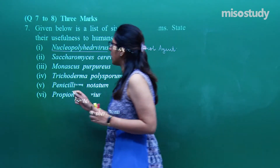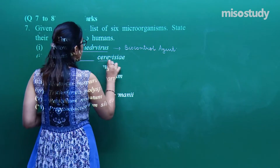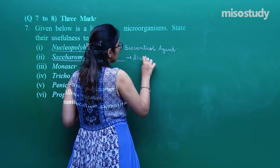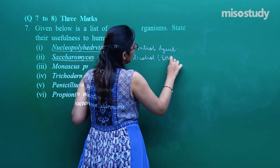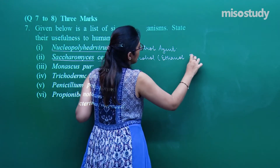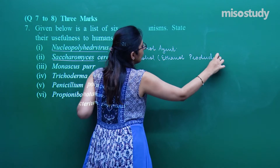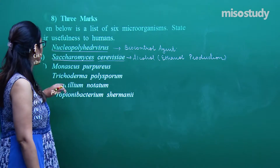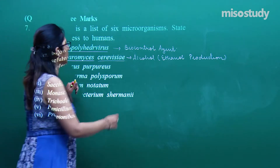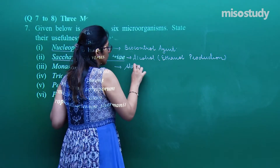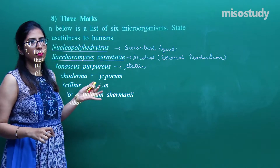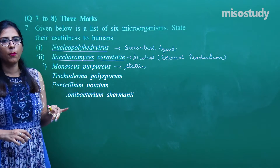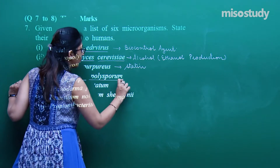Second: Saccharomyces cerevisiae — this is baker's yeast or brewer's yeast, used for production of alcohol, specifically ethanol. It is also important for production of cakes. Third: Monascus purpureus — this is important for production of statin, and statin is a blood cholesterol-reducing agent — it reduces blood cholesterol. Fourth: Trichoderma polysporum — it produces cyclosporin A.